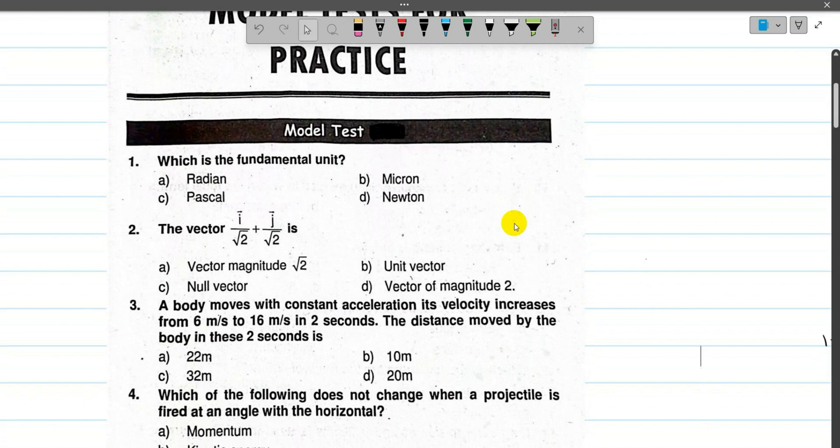Now for question number 1, which is the fundamental unit? What is the fundamental unit? Pascal, Newton, and the variance. The variance is the length of the arc by variance. The answer is micron. The value of 1 micrometer is 10 to the power of -6 meters. Basically, micron is the fundamental unit.